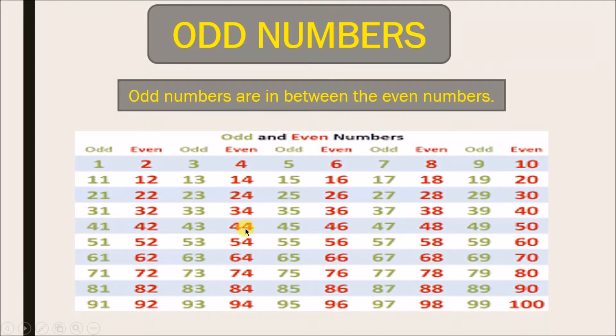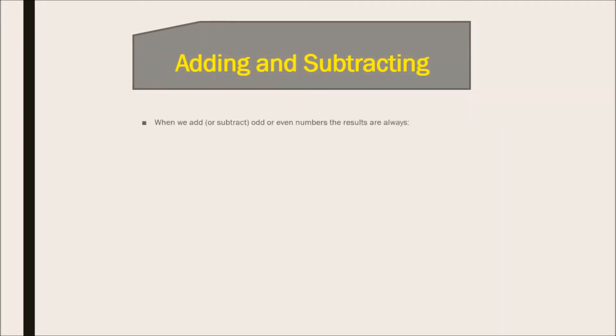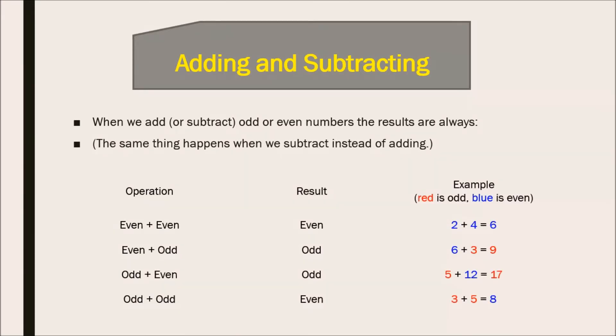Now let's see when we add or subtract the odd and even numbers, then what will happen. When we add even plus even, then the result is even. For example, two plus four is six. When we add even plus odd, the result is odd. When we add six plus three, the answer is nine. Odd plus even, the result is odd. For example, five plus twelve equals seventeen.